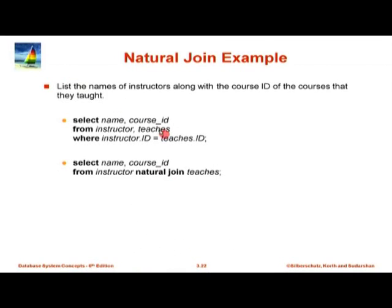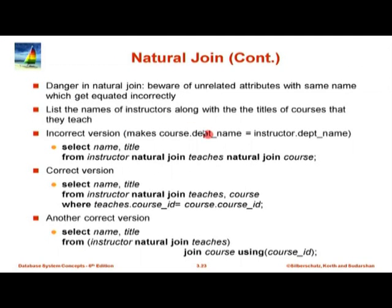This is basically the same thing as the previous one - it shows the query with the condition instructor.id equal to teachers.id, which is equivalent to natural join, as long as they select the same list of attributes. Now, there is a risk to natural join. This can be a little tricky, and things which seem to work may not actually be correct.